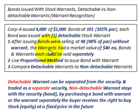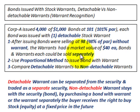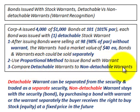The bonds were selling separately at 98% of par, and a warrant had a market value of $40 each. The bonds and the warrants each could be sold separately. We're going to be using the proportional method to issue the bond with the warrant, and we'll compare the detachable warrants to non-detachable warrants.